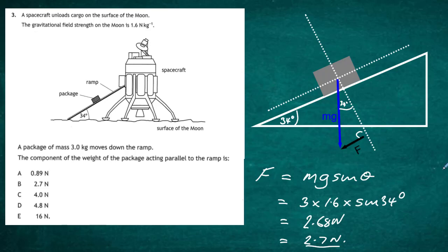If you forgot you were on the surface of the moon and used Earth's gravity, you would have got 16 newtons instead. Be very careful reading the question and note where you are, because different heavenly bodies have different gravitational field strengths. The answer is 2.7 newtons — choice B.